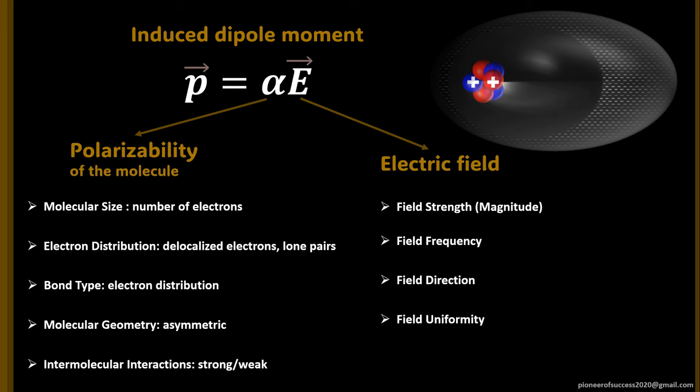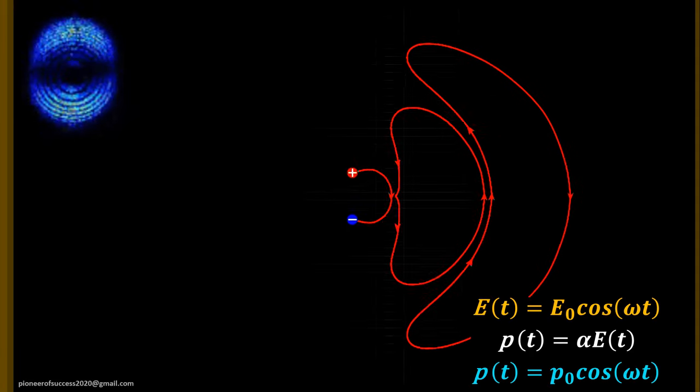Based on these parameters, there are two conditions: a favorable condition where the molecule gets strongly polarized, and an unfavorable condition where the molecule does not get strongly polarized. In the unfavorable condition, the incoming electric field cannot change the energy state of the molecule, and the strength of the polarization is very weak.